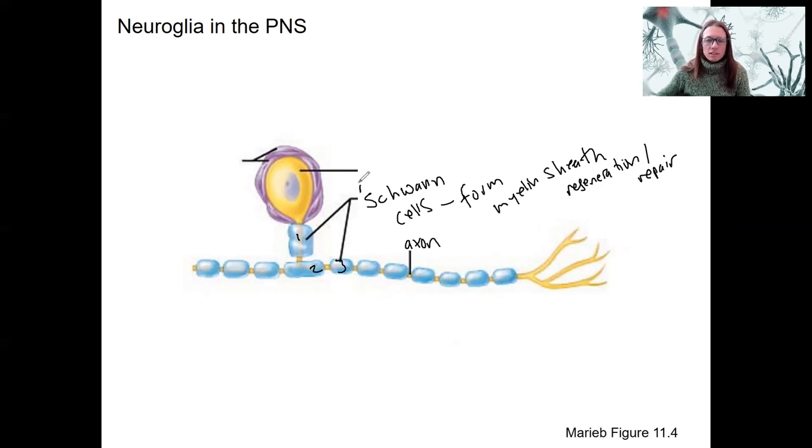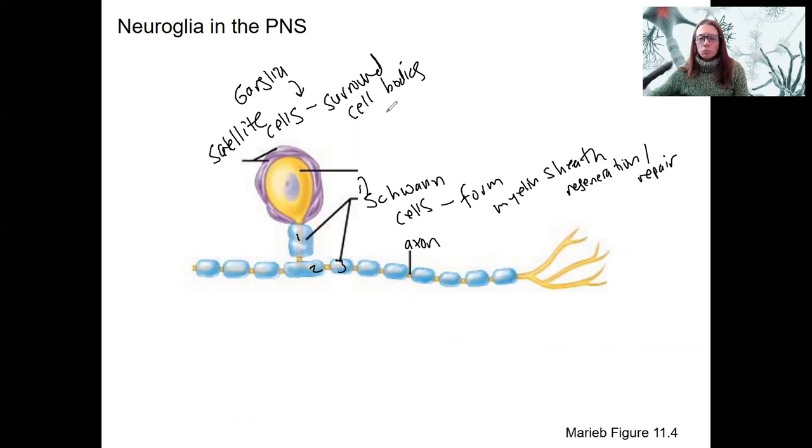Number two is satellite cells. These surround the cell bodies. So where would these be? These are going to be in the ganglia. That's the only place there are cell bodies in the peripheral nervous system. These are going to be providing insulation support, similar to astrocytes. Also regulating that chemical environment of the neurons here. Satellite cells are actually present in other organs as well. There's satellite cells that are a little bit different, but that help support muscle cells as well, for example.